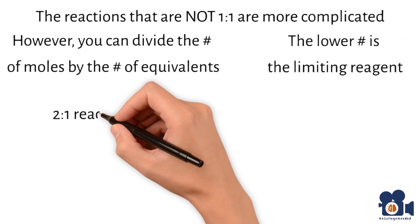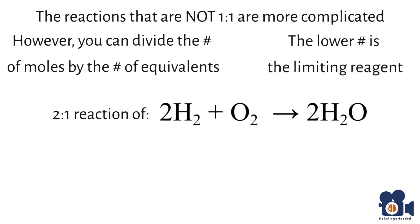For example, let's look at the two to one reaction of 2H₂ + O₂ → 2H₂O with 10 moles of H₂ and 10 moles of O₂. Dividing the moles by the equivalents would look like this: 10 moles of H₂ divided by 2 equivalents equals 5 moles of H₂.